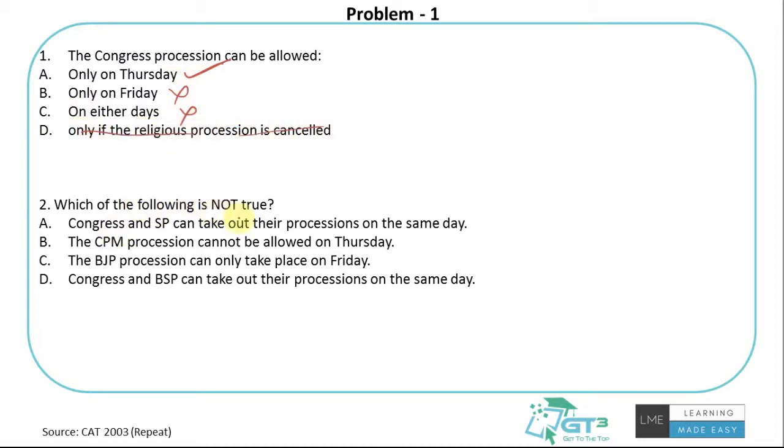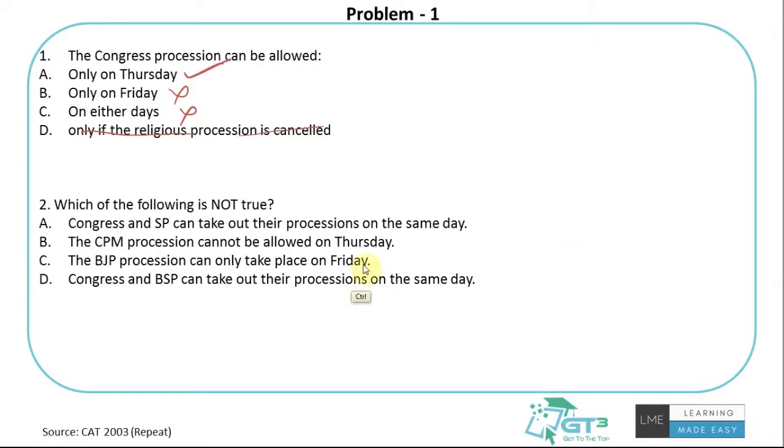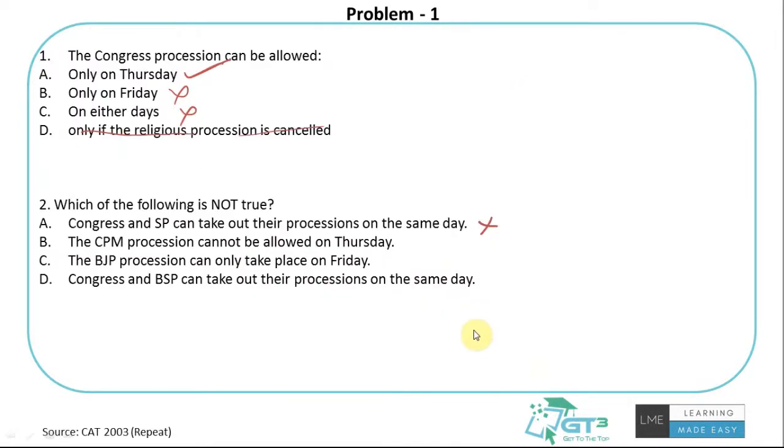Which of the following is NOT true? Congress and SP can take out their processions on the same day. Is it true? Yes, Congress and SP are taking it on the same day. So this is definitely not a false statement. CPM procession cannot be allowed on Thursday, which is again true. CPM cannot do it on Thursday; they can do it on Friday. That's again a correct statement. The question is asking for the incorrect statement, so I cannot mark that.